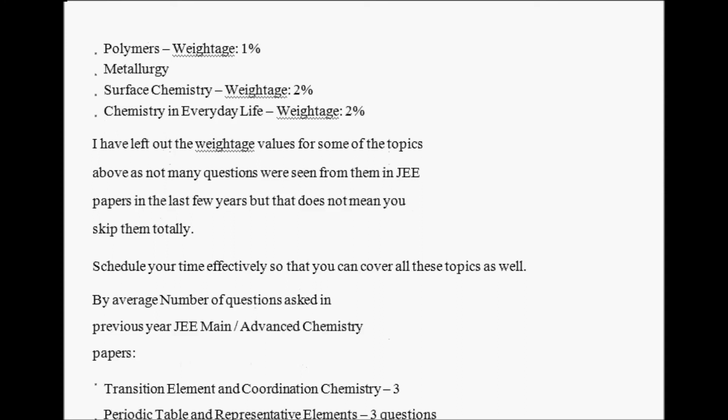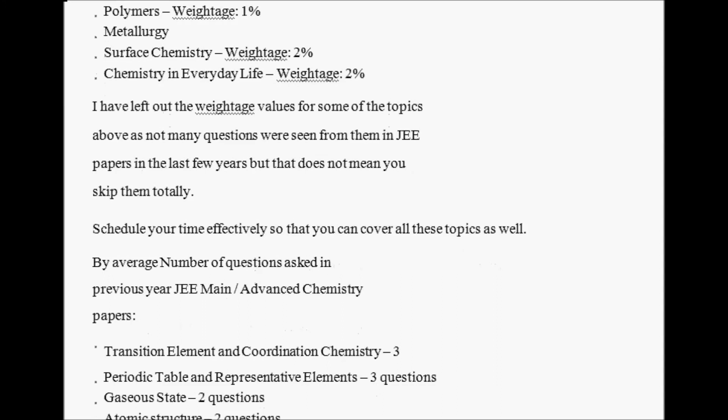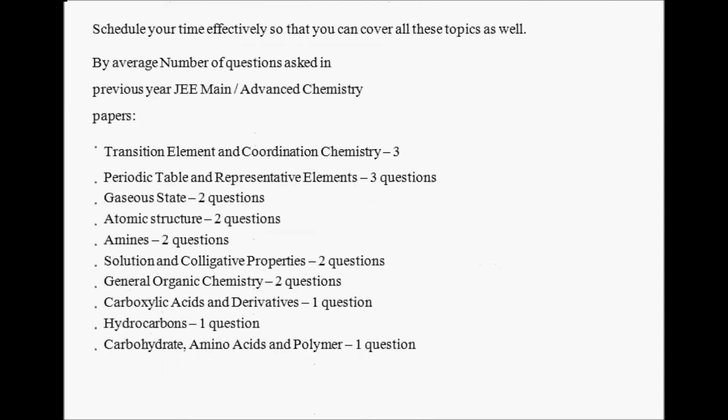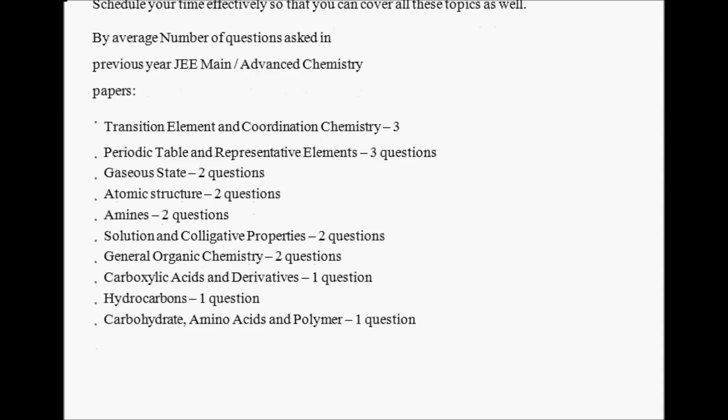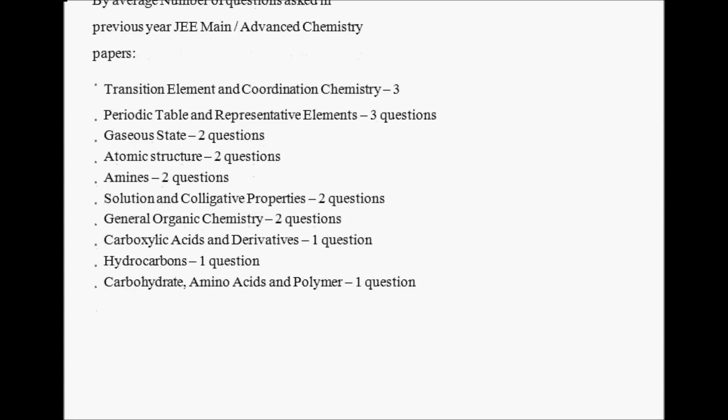I have left off the weightage values for some of the topics above as many questions were not seen from them in JEE papers in the last few years. But that does not mean you skip them totally. Schedule your time effectively so that you can cover all these topics as well. The average number of questions asked in previous years in JEE Mains and Advanced Chemistry papers: Transition Elements and Coordination Chemistry - 3 questions. Periodic Table and Representative Elements - 3 questions. Gaseous State - 2 questions. Atomic Structure - 2 questions. Amines - 2 questions. Colligative Properties - 2 questions. General Organic Chemistry - 2 questions. Carbohydrates - 1 question. Amino Acids - 1 question.